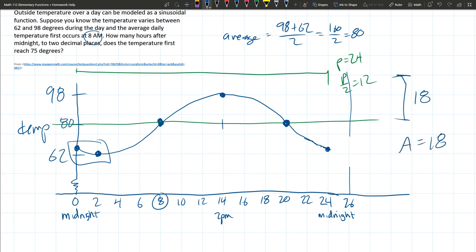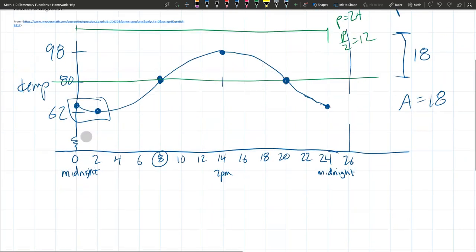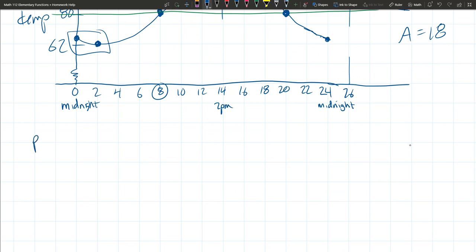We know our period is 24. Also period is 2π over w. So that means 2π over w equals 24. And we're going to solve for w. Multiply by w, 2π equals 24w, divided by 24. So we got π/12 is w.